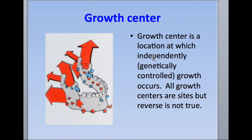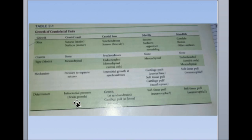The growth center is a location independently present and is responsible for the overall formation of the mandible. There is a small table — Table 2.1 in the Profit textbook — which you should mention as part of a 7-mark question; it provides very good information regarding the growth site and growth center, covering various growth sites and centers present in the maxilla and mandible. Thank you.